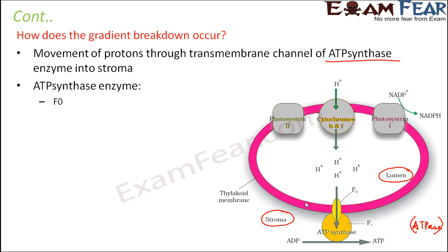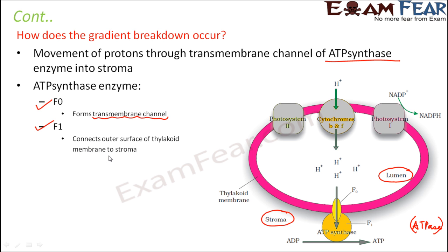The ATP synthase enzyme has two parts: F0 and F1. The F0 part forms the transmembrane channel — it is embedded within the membrane itself and acts as the tunnel through which protons pass. The F1 part is a spherical structure that connects the outer surface of the thylakoid membrane to the stroma. Hydrogen ions enter through the F0 channel, pass through F1, and are then released into the stroma.